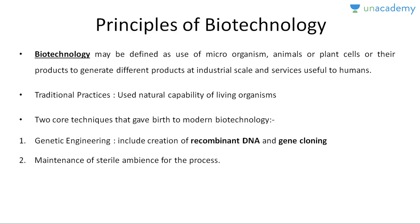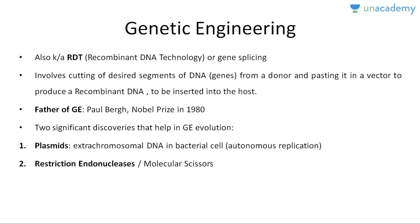Genetic engineering includes the creation of recombinant DNA, and then this recombinant DNA is transferred to the host, which is multiplied with the help of gene cloning procedures. Moving on, genetic engineering is also known as recombinant DNA technology or gene splicing. It is known as gene splicing because it involves the cutting of DNA from the donor organism — we cut a particular gene of interest and cut the plasmid DNA to make space for this gene. This involves various cuttings, that is why it is known as gene splicing.